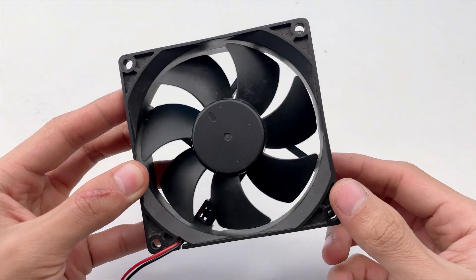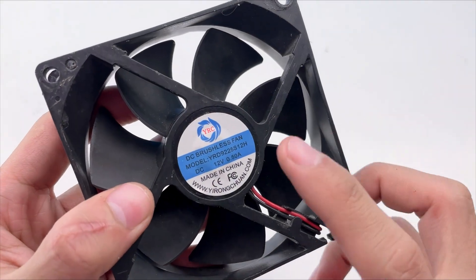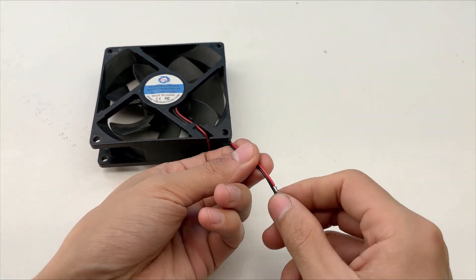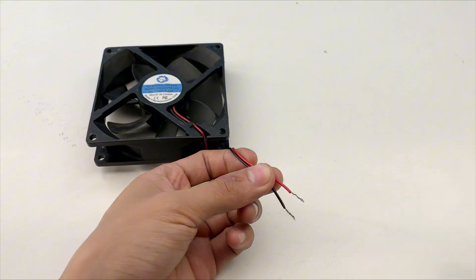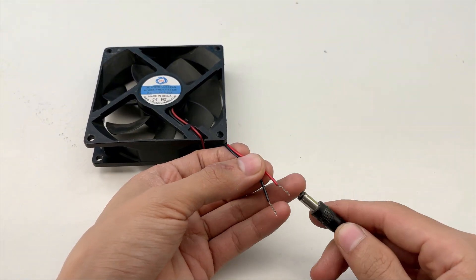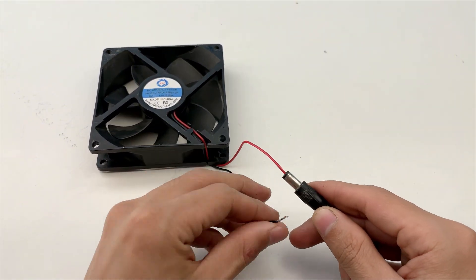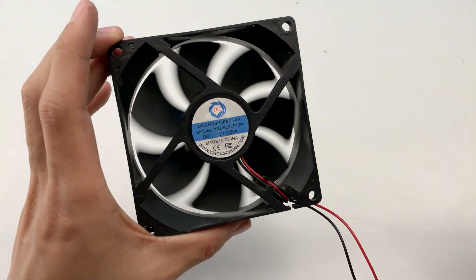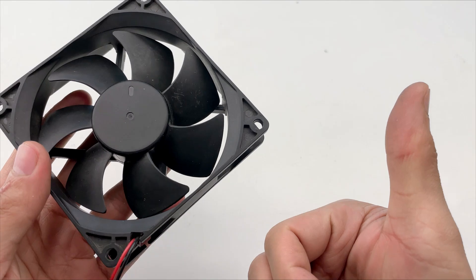The next item is an old 12 volt cooling fan, something you can easily find on e-commerce sites or at any hardware store. Even though I've neglected it for a long time, it still works well.